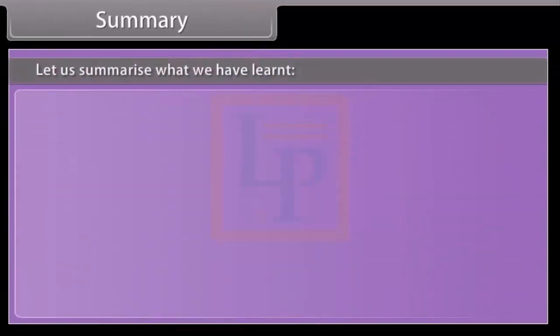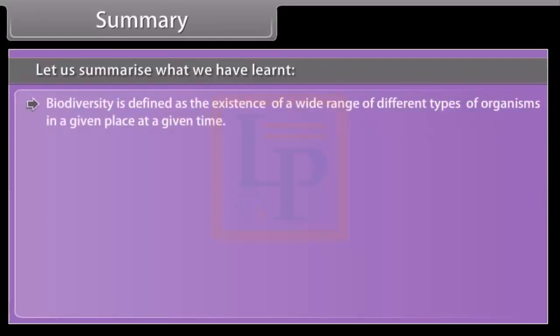Summary. Let us summarize what we have learned. Biodiversity is defined as the existence of a wide range of different types of organisms in a given place at a given time. Biodiversity increase when we move from high to low latitude.